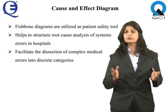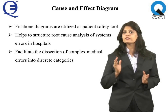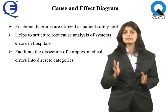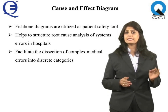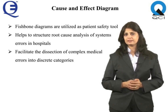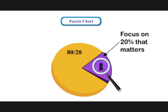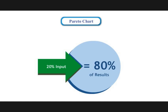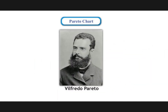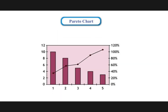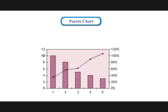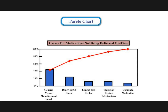Fishbone diagrams are now widely utilized as a patient safety tool to structure root cause analysis of systems errors in hospitals and other healthcare settings. These diagrams facilitate the dissection of complex medical errors into discrete categories. The Pareto Chart is used to identify the vital few problems or causes of problems that have the greatest impact. Also known as the 80/20 rule, the Pareto Chart is a bar chart named after Italian economist Vilfredo Pareto. The lengths of the bars represent frequency, cost, time, or money, and are arranged with the longest bars on the left and the shortest to the right. The chart visually depicts which situations are most significant, with an example showing causes for medication not delivered on time.